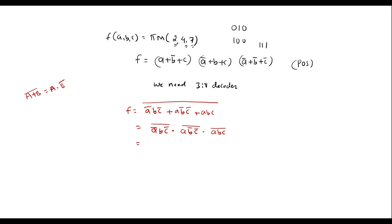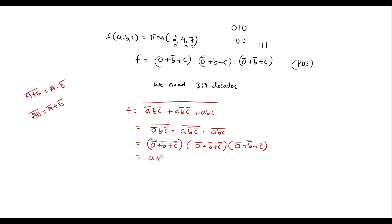Applying De Morgan's theorem further: (ĀBC̄) bar becomes (A + B̄ + C); (AB̄C̄) bar becomes (Ā + B + C); and (ABC) bar becomes (Ā + B̄ + C̄). Comparing this with the original equation, the results are the same, confirming the implementation is correct.